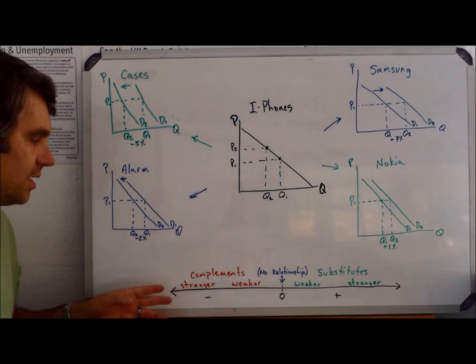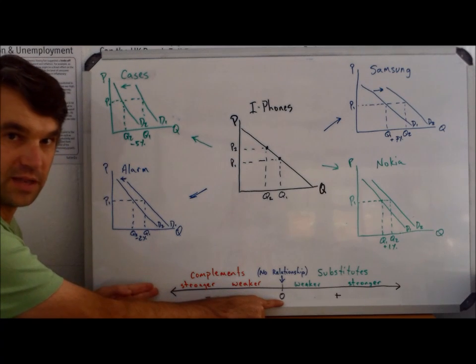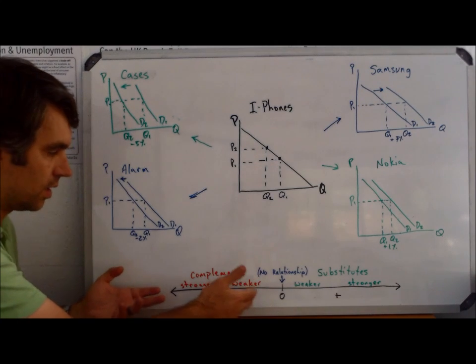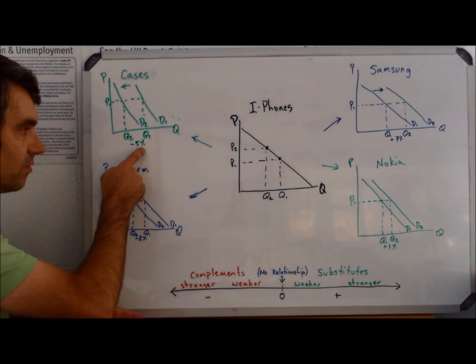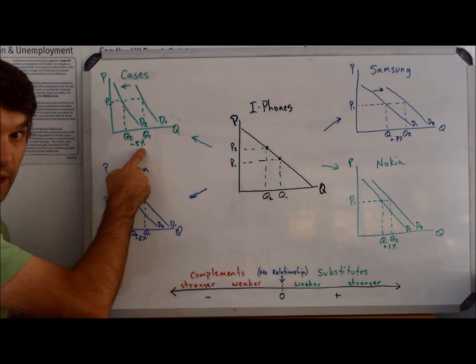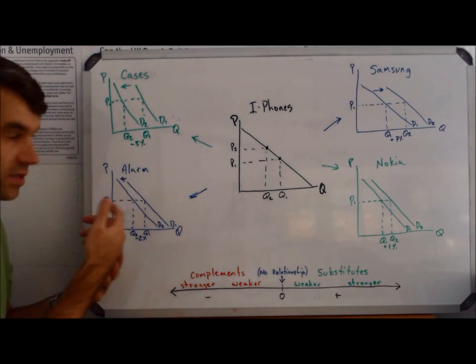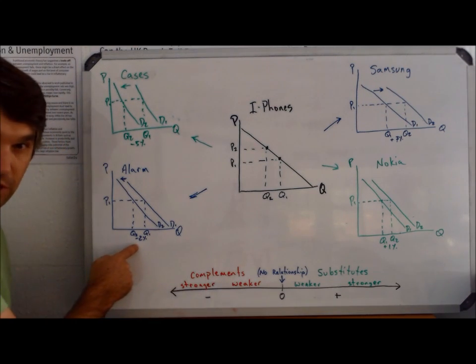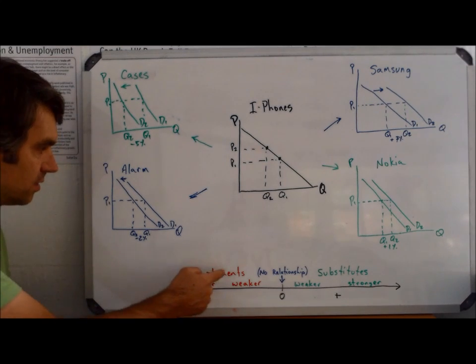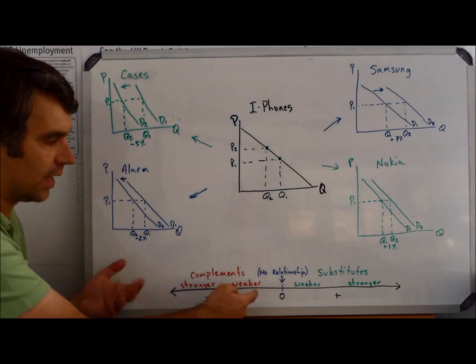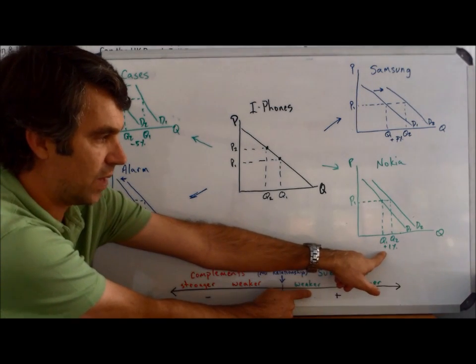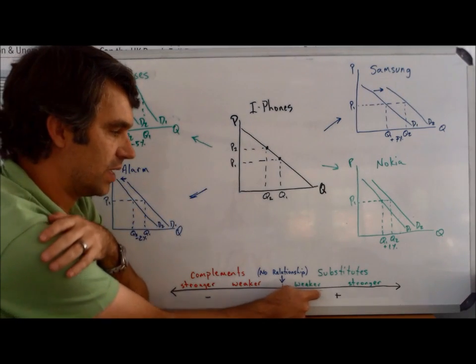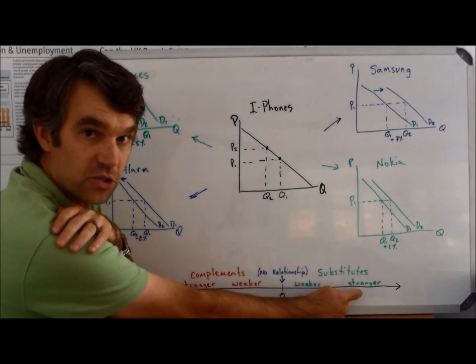I like to represent this on a number line as well. What we can see is that the further our XED values get from 0, they're going to be stronger or weaker. For complements, this was negative 5% divided by 10%, so negative 0.5. That's further from 0 than negative 0.2, so it's a stronger complement. Likewise, Nokia was positive 0.1 versus Samsung positive 0.7, which means Samsung is a stronger substitute.